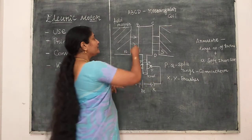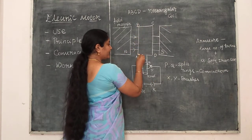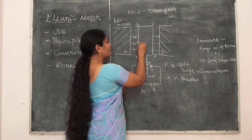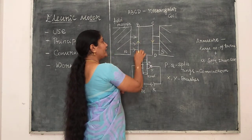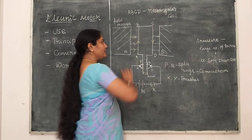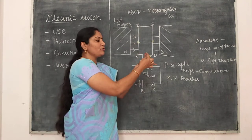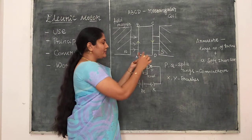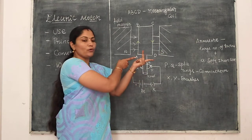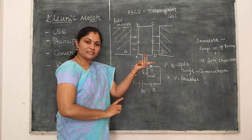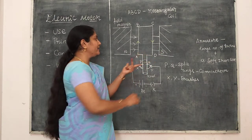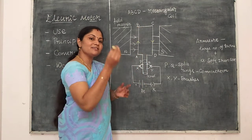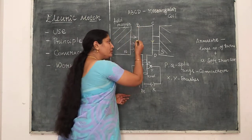Here, this is the current-carrying conductor. From the positive terminal, current flows from A to B. This is the direction of the current, and this is the direction of the magnetic field. This is the direction of the force experienced by the current-carrying conductor, so this arm AB will experience a downward force.